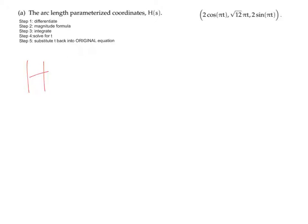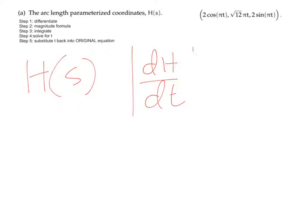So H of s is going to come from dH/dt. We differentiate H with respect to t, apply the magnitude formula, and then integrate from t₀ to t₁ dt.